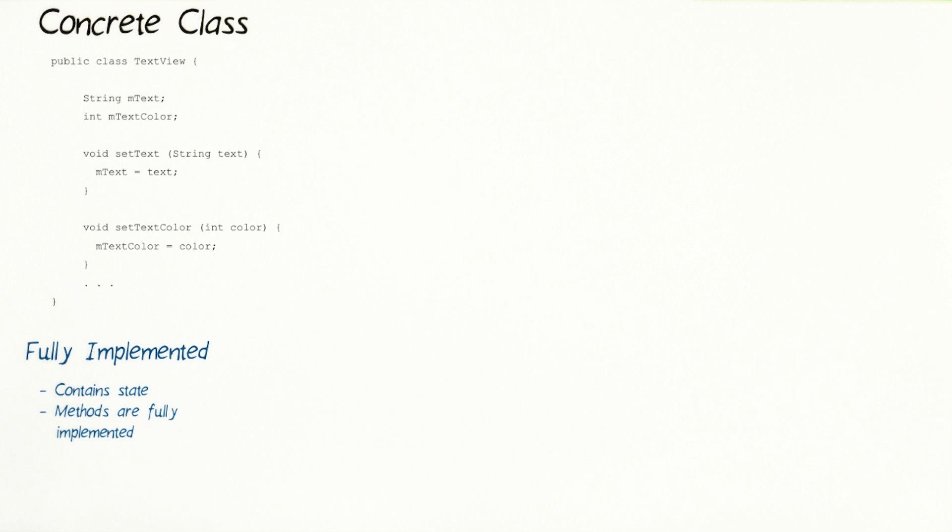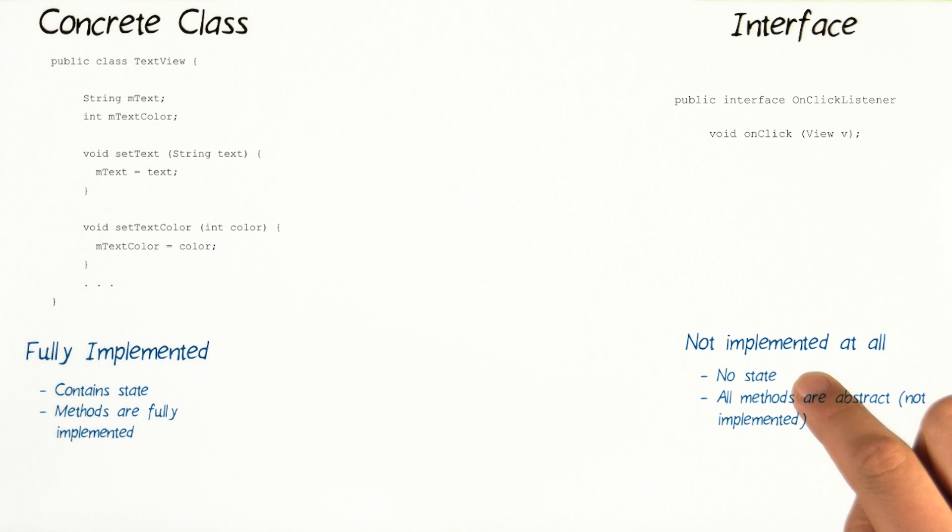Well, in the last course, we learned about classes like TextView, which contains state and methods that are fully implemented. Meaning, there are instructions in each method. Now, we are being introduced to interfaces, which contain no state. But it does contain method signatures.